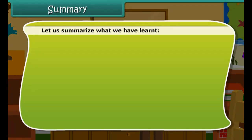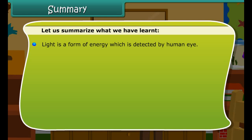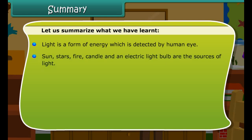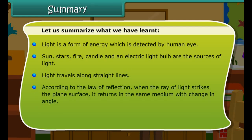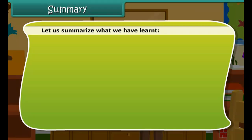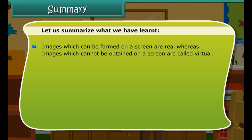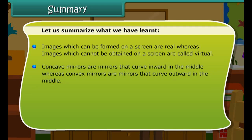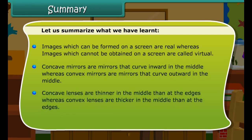Summary. Light is a form of energy which is detected by the human eye. The sun, stars, fire, candle, and electric light bulb are sources of light. Light travels along straight lines. According to the law of reflection, when a ray of light strikes a plane surface, it returns in the same medium with a change in angle. Any polished or shiny surface can act as a mirror and change the direction of light. Images that can be formed on a screen are real; images that cannot are called virtual. Concave mirrors curve inward and convex mirrors curve outward. Concave lenses are thinner in the middle, while convex lenses are thicker in the middle.